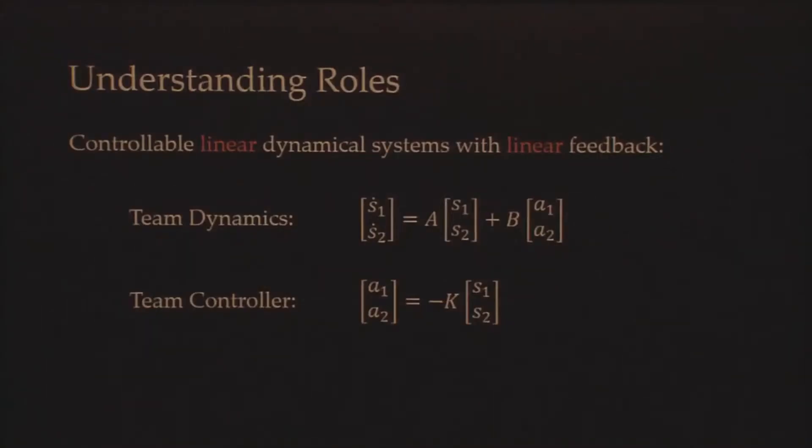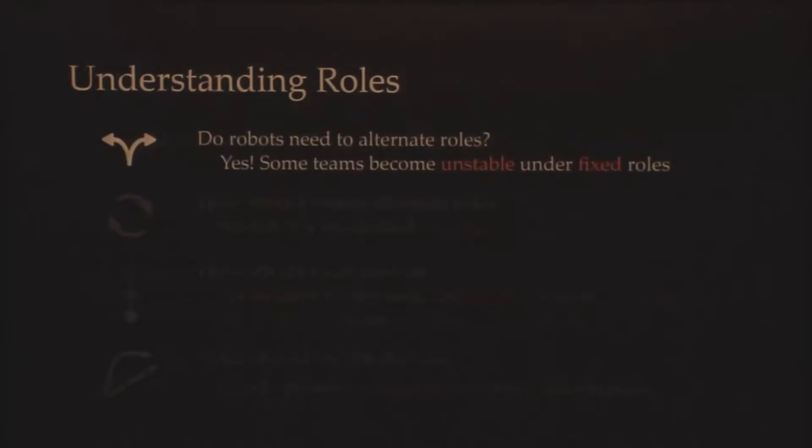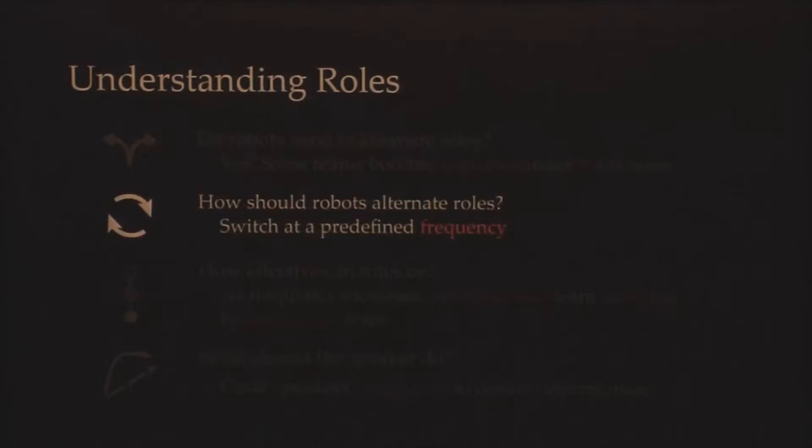In order to better understand these different roles and how they work, we looked at some simple settings just to get some sort of baseline understanding. Specifically, we looked at controllable linear team dynamics with linear feedback. And we found four interesting properties. The first being, if I have these roles or I have a speaker and a listener, can I always be the speaker or do I need to switch? Turns out, yes, you definitely need to change roles or else your team can become unstable. Okay, great. I need to change roles, but how should I do this?